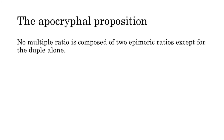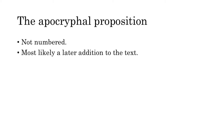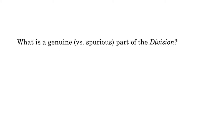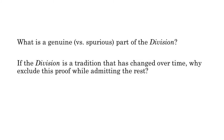No multiple ratio is composed of two epimoric ratios, except for the duple alone. This proposition is traditionally not numbered, and it is almost certainly a later addition to the text. It appears in only one textual tradition, and some aspects of the Greek wording strongly suggest a different author than the rest of the propositions. It's tempting to exclude it as not being a genuine part of the division, but it's hard to draw any clear distinctions between genuine and spurious parts. If we take the view that the division is a textual tradition to which many authors have contributed through the centuries, and that this status is far more important than the work of any particular author, then there is no reason to exclude this proof while admitting the rest.